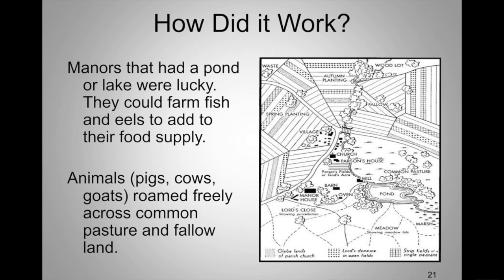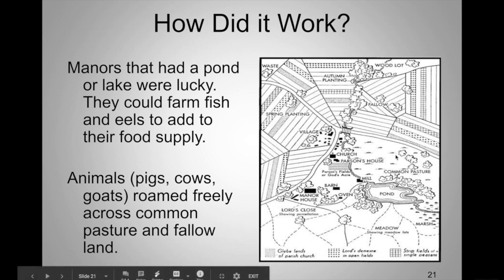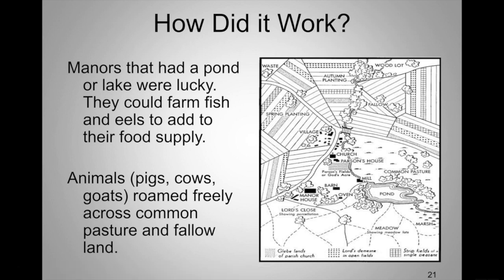For peasants, their diet was mainly vegetables and grain — they had very little access to protein. Animals such as pigs, cows, and goats would roam freely in the common pasture land, but peasants were not allowed to kill those animals. Doing so would be considered poaching, which could result in execution.